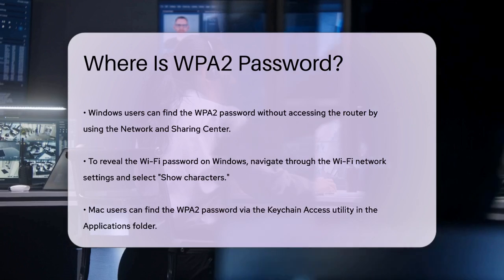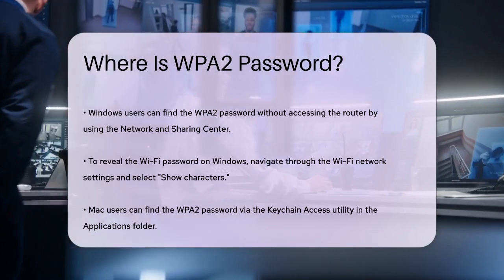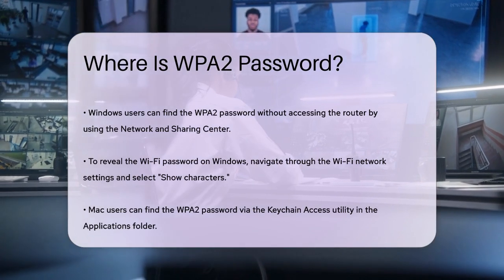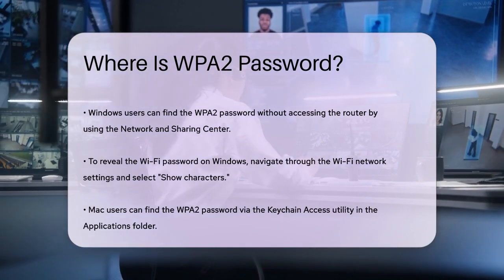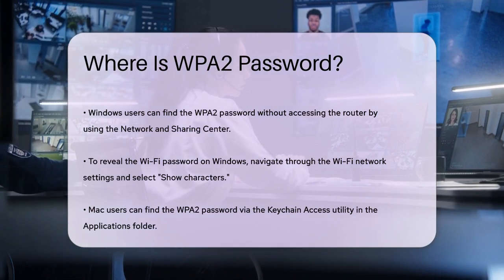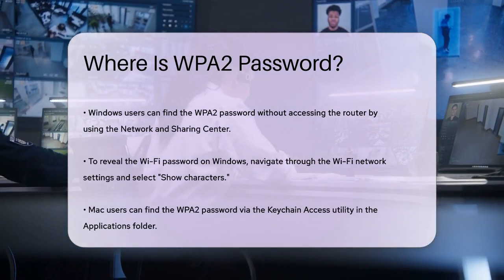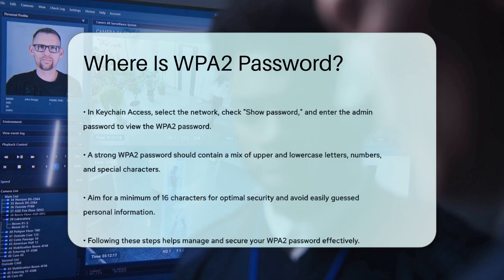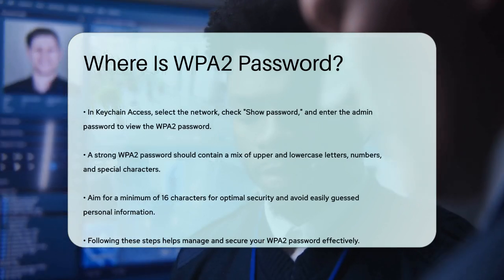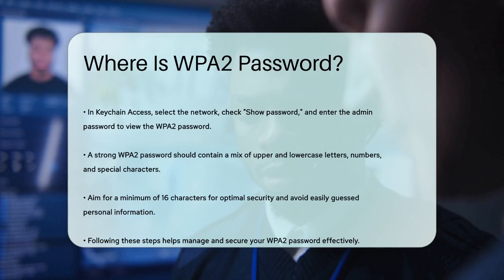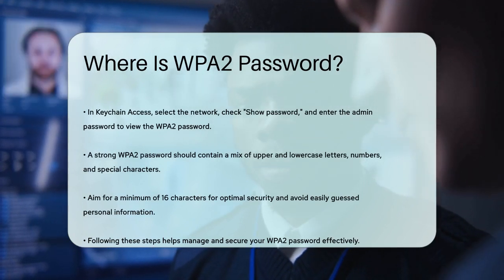On a Mac, you can find the WPA2 password by opening the Keychain Access utility. Go to your Applications folder, find the Utilities folder, and open Keychain Access. Select System in the left panel, then choose Passwords at the top. Double-click on the name of your network to show the Wi-Fi information, check the Show Password option, and type in your admin password to reveal your Wi-Fi password.